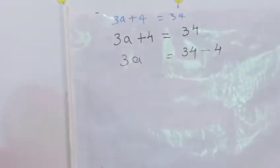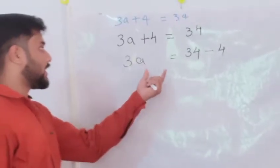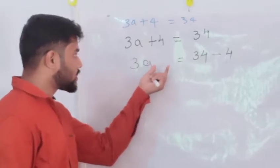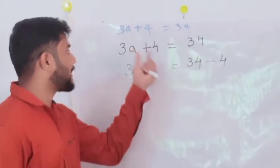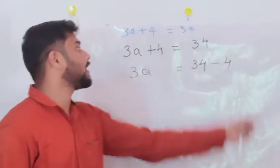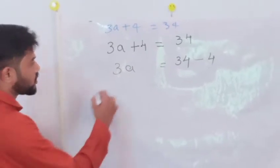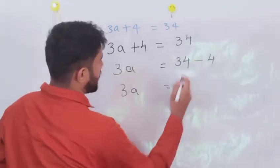The sign will change. From left hand side, we are taking plus to right hand side, then the plus becomes minus. So, 3A, which is equal to 34 minus 4, which is 30.